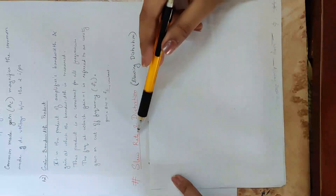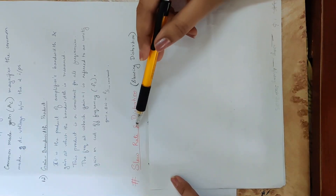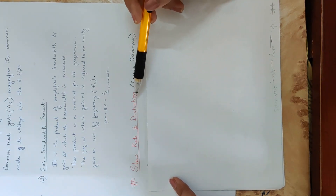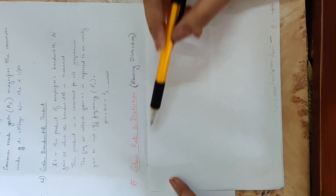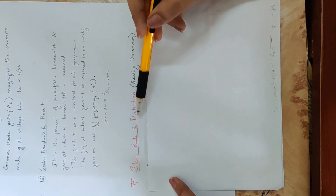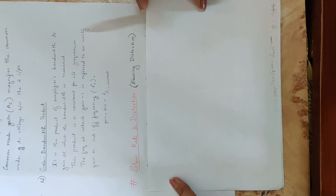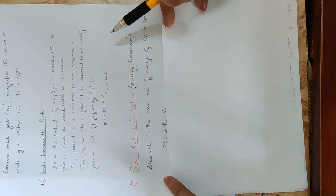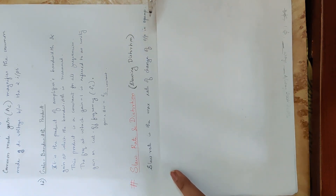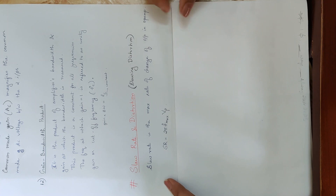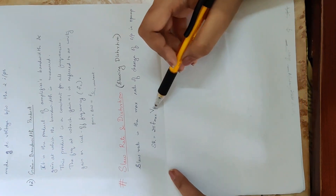The slew rate is due to the distortion in the output waveform. It is defined as the maximum rate of change of output in an opamp, that is dvO/dt_max. We also express this as 2πf_max into Vp.